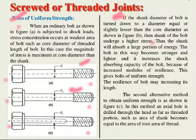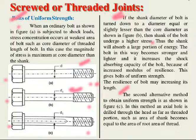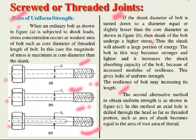This increased modulus of resilience gives the bolts of uniform strength. The resilience of the bolt may increase with its length. The second alternative method to obtain uniform strength is as shown in figure C.